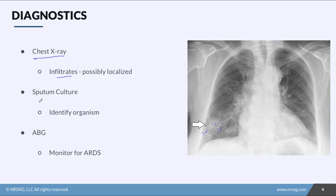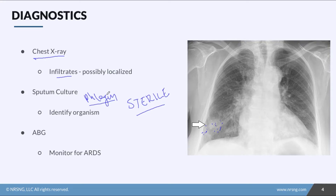The second diagnostic tool is a sputum culture. We have the patient cough up some phlegm — it must be phlegm, not saliva — into a sterile cup. This is a sterile procedure; the phlegm must come from the sterile airway. If the patient is intubated, we can suction directly from the tube to obtain our sputum culture. This is so important because it's how we identify the organism and determine if it's infectious, bacterial, or viral, so we can treat it with the right antibiotics.